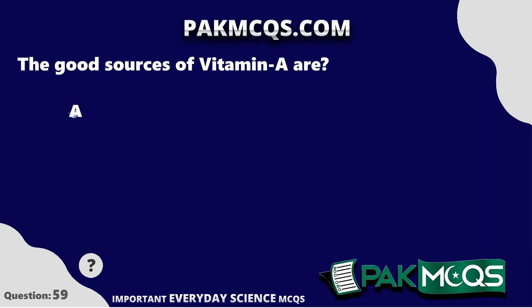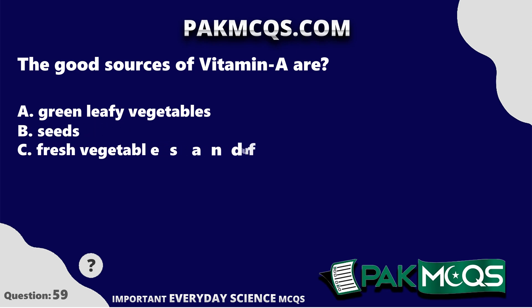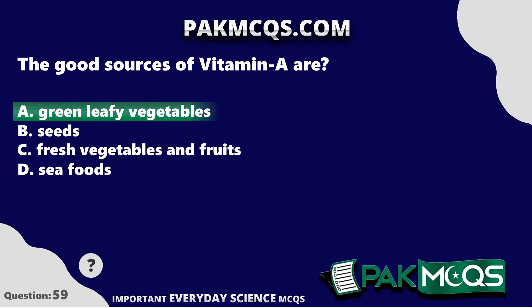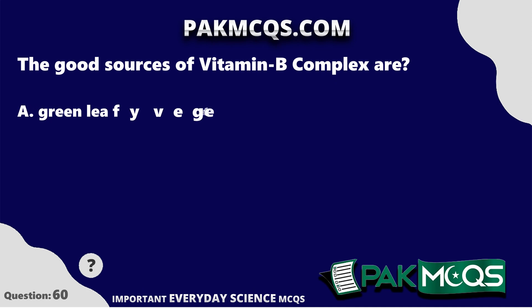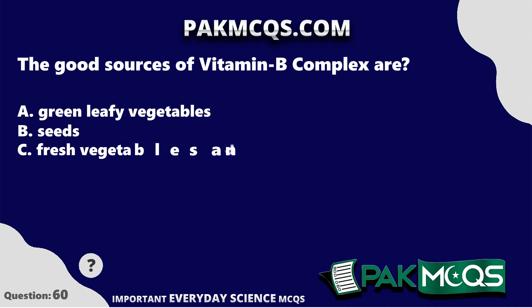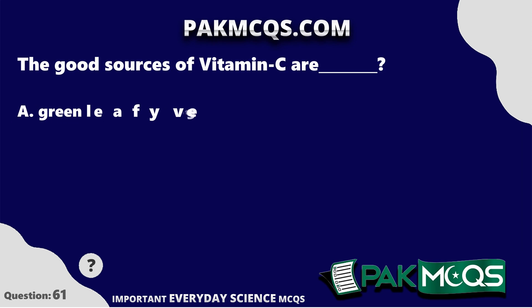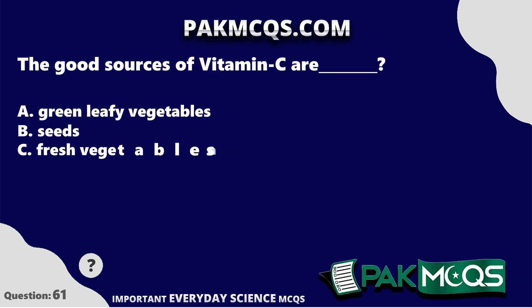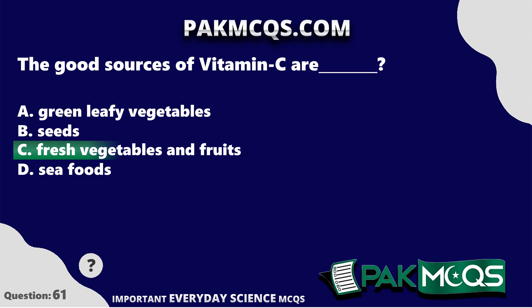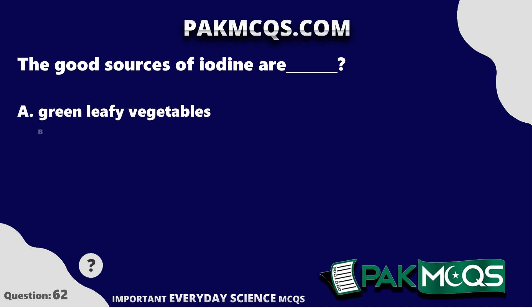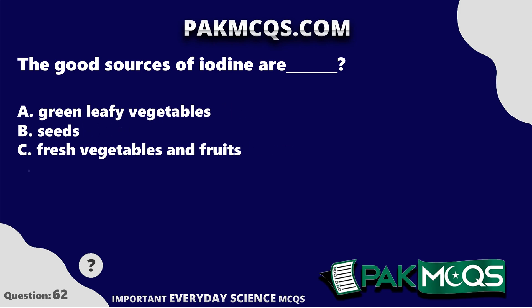The good sources of Vitamin A are green leafy vegetables. The good sources of Vitamin B complex are seeds. The good sources of Vitamin C are fresh vegetables and fruits. The good sources of iodine are seafoods.